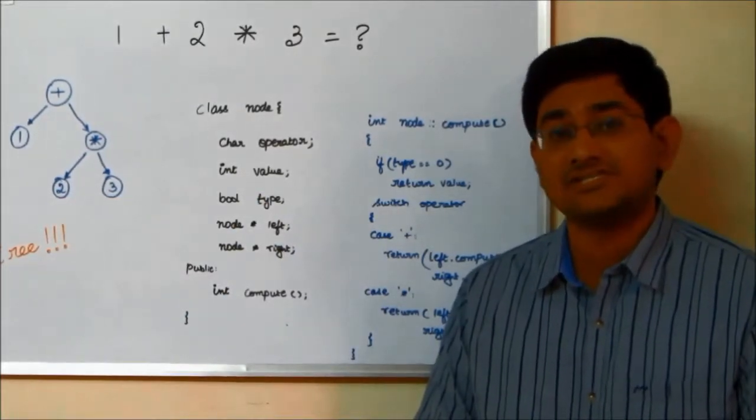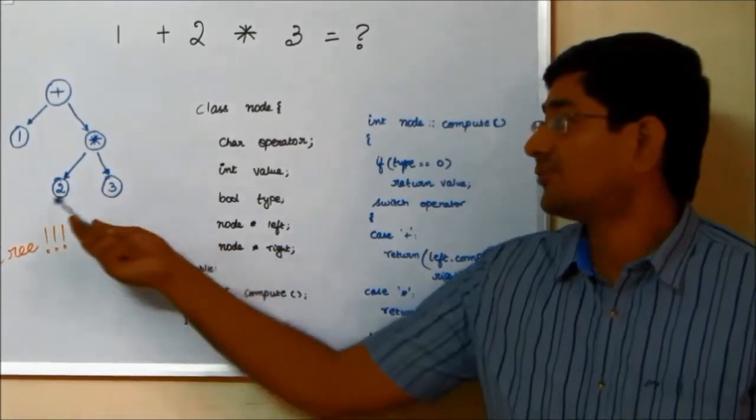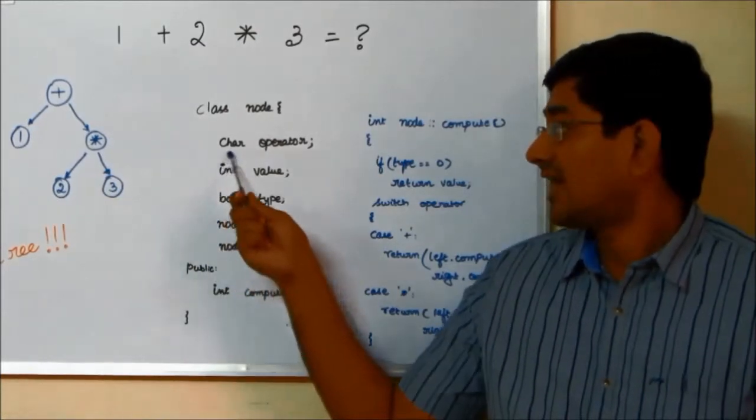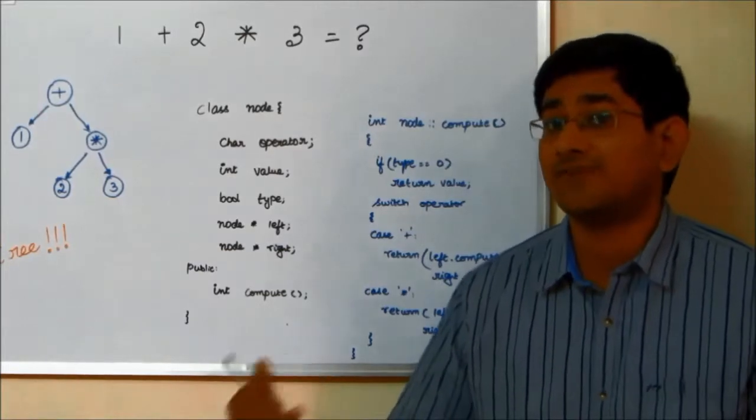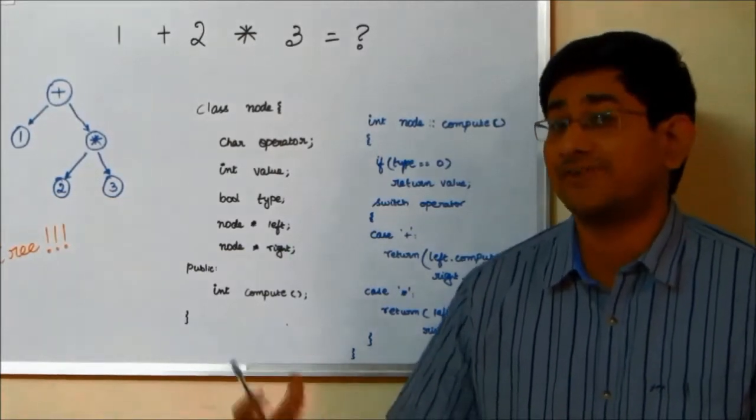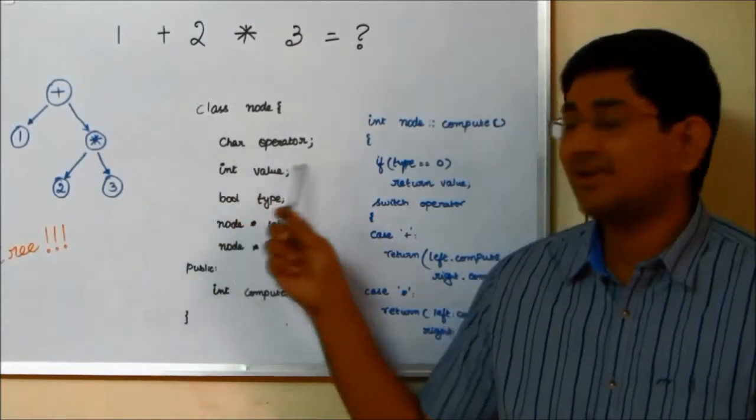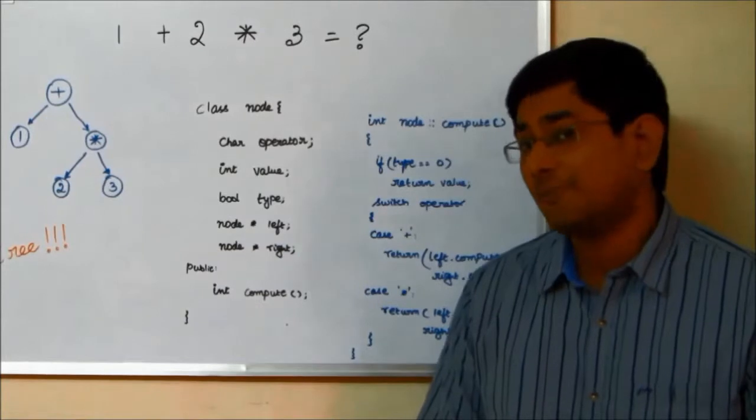But this is what we need. There are certain inefficiencies. The first thing is, let's assume I am storing the value of 2 and 3 and 1 in an object. The value of operator is null and therefore I use 1 byte of data or in this case 1 word of data. In the case of plus and star, the variable int value is not used and therefore I waste 4 bytes of data.